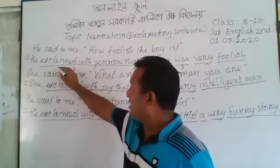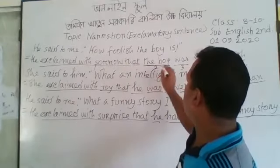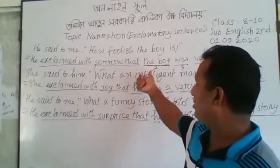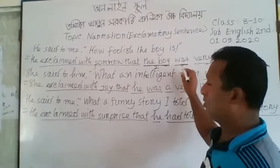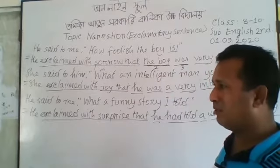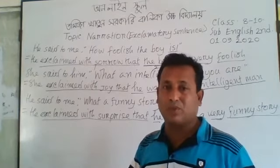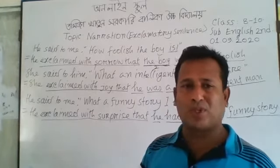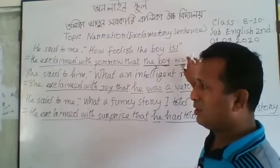So I will use 'exclaimed with sorrow that.' In the second position is the subject — here it is third person, so it has no change. In the third position, we use the verb. There was 'is,' and 'is' is changed according to the corresponding tense. Because we have to change the reported speech tense according to the corresponding past tense — if there is 'is,' it will become 'was.' In the fourth position is 'very,' and in the fifth position is the adjective.